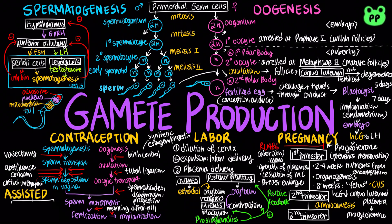Modern technology can provide infertile couples with assisted reproductive technologies. In vitro fertilization, or IVF, mixes eggs with sperm in culture dishes and returns the embryo to the uterus at the 8-cell stage. Another method includes intracytoplasmic sperm injection, or ICSI, in which sperm are injected directly into an egg.